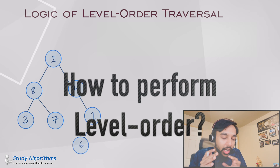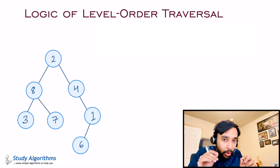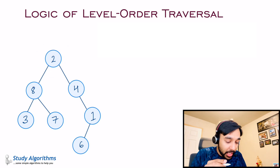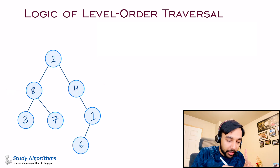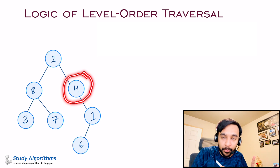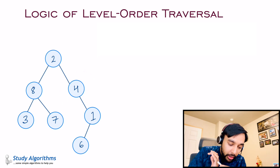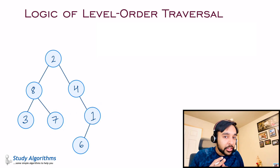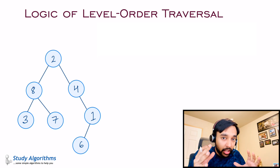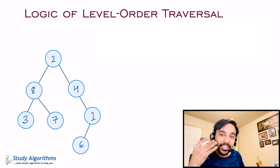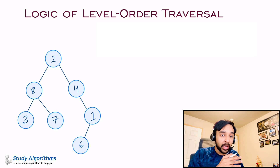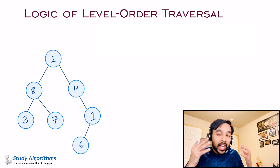A good way to solve any problem is to think about what is happening. When we are doing a level order traversal, notice that the elements we encounter first are processed first. For example, when you go to level 2, the first element you see is element 8, and then element 4. This is the order of processing. At level 3, 3 is the first element, then 7 and then 1. This tells you that you need a structure where you get an element and process it in the same order you receive it. Whenever you see such ordering, the first data structure that should come to mind is a queue, because a queue follows the first-in-first-out policy.